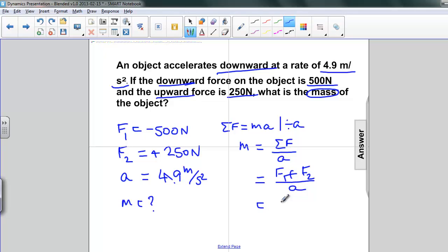Substitute all the values in. We have negative 500 newtons. Then we have, for F2, a positive 250 newtons, and an acceleration of 4.9 meters per second squared.